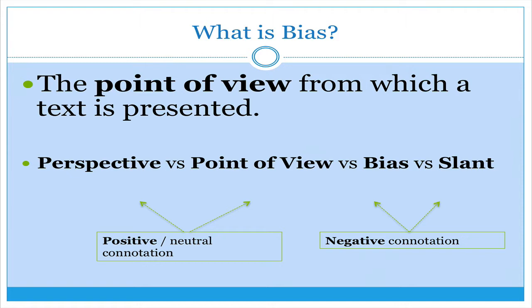We have many synonyms that exist along the same lines as the word bias. For example, we might say the perspective of a text, or the point of view, or perhaps actually use the word bias. Or we might hear the word slant or angle. All of these words mean about the same — basically, how is a story being told? From what perspective? What point of view, what bias, what slant?